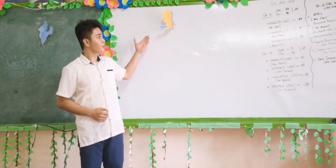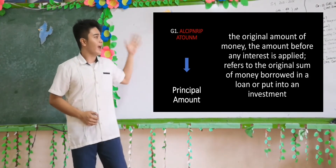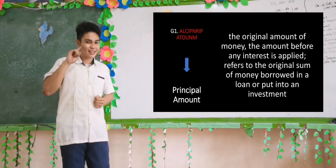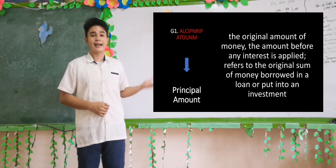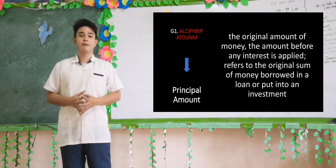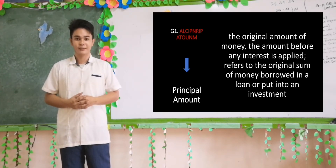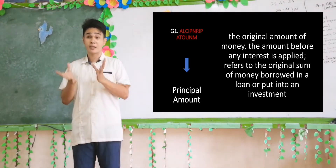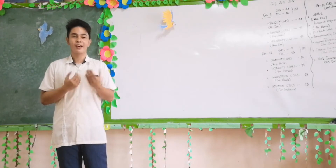Group one's jumbled words, when arranged, give the answer: principal amount. Their corresponding definition is correct. Principal amount is defined as the original amount of money — the amount before any interest is applied — and the original sum of money being borrowed from a loan, balance, or put into an investment. For example, if I borrow a specific amount from you, that exact amount, no less, no more, is the principal amount itself. Very good, group one.